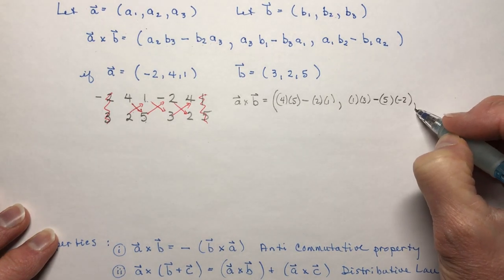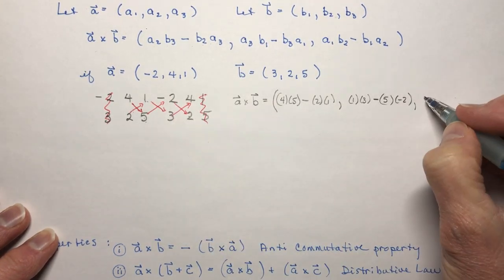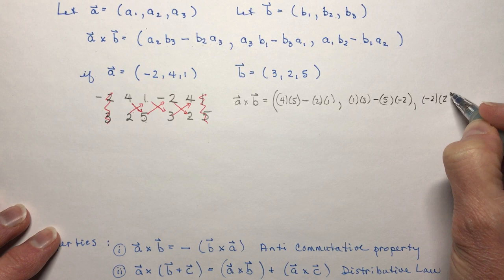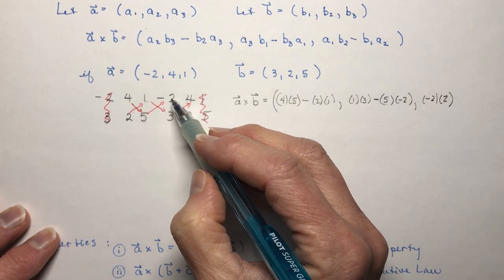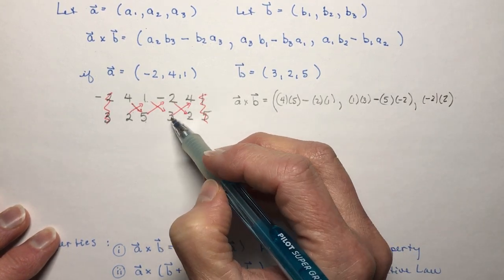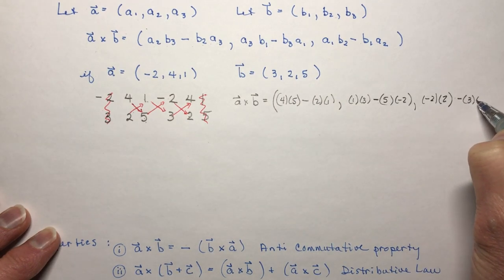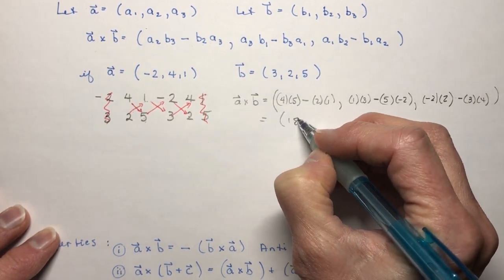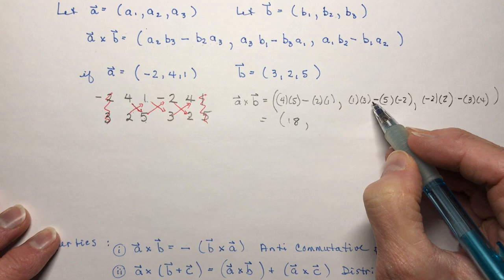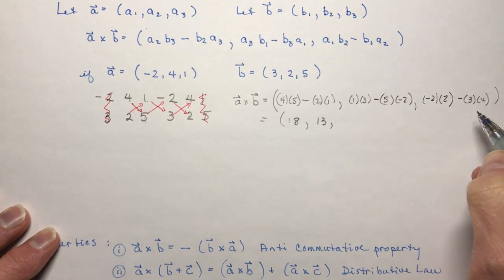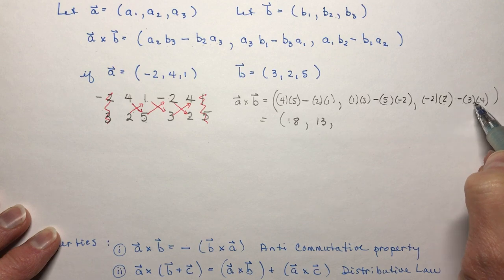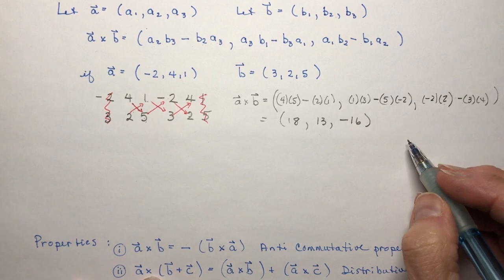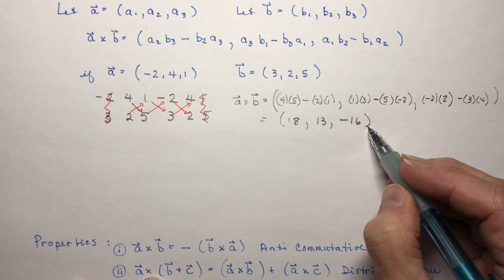And then I'm going to do minus 2 times 2 and each one of these little calculations is going to give me one of the values in my triplet so I have minus 2 times 2 minus 3 times 4 and now all you have to do is the baby math here so I have 20 minus 2 it gives me 18 and I have 3 plus 10 which is 13 and I have minus 4 minus 12 is minus 16.